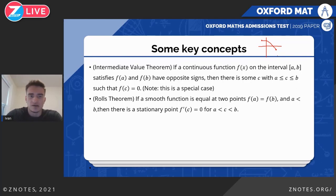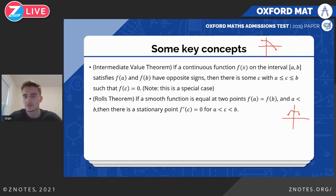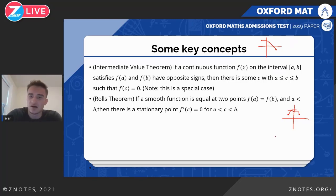There's also Rolle's Theorem, which usually comes up through geometric situations. Basically, if you have a graph that is smooth and equal at two or more points, it tells us there must be a stationary point somewhere between them. We'll see that come up in the paper.